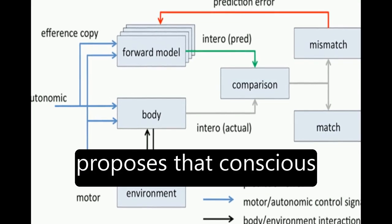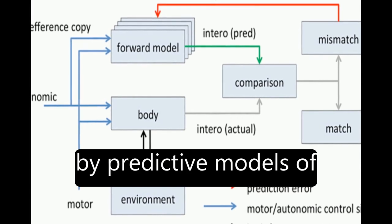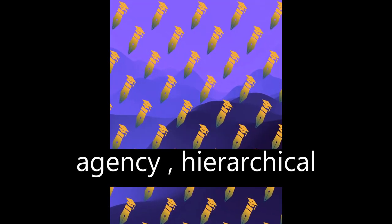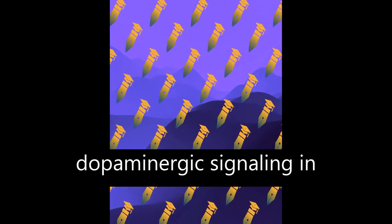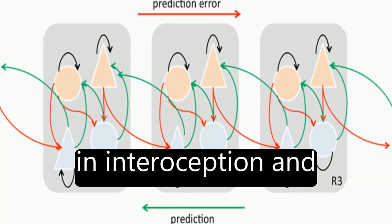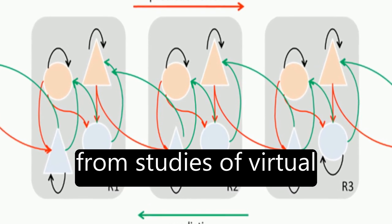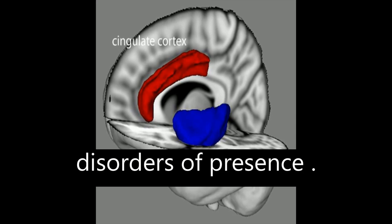The theoretical model proposes that conscious presence is based on interoceptive prediction error and is influenced by predictive models of agency, hierarchical predictive coding, dopaminergic signaling in cortex, the role of the anterior insular cortex in interoception and emotion, and cognitive neuroscience evidence from studies of virtual reality and psychiatric disorders of presence.